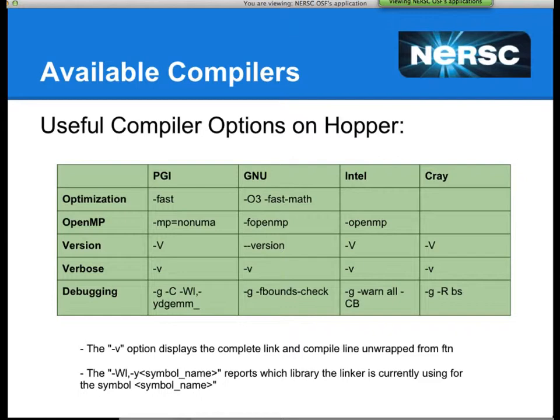Another useful trick is using -Wl,-y followed by a symbol name, for example DGEMM from BLAS. This will report which library the linker is currently using for that subroutine or function. For instance, if you're confused about whether you're getting DGEMM from MKL or LibSci, this command will tell you exactly which library it's coming from.